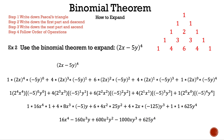We can't simplify any more. So now we have 16x to the 4th minus 160x cubed y plus 600x squared y squared minus 1000xy cubed plus 625y to the 4th. That is the expansion using the binomial theorem. If you don't remember it, you can do it the old-fashioned way and distribute the quantity of 2x minus 5y raised to the 4th power four times. And that is the answer for example 2.